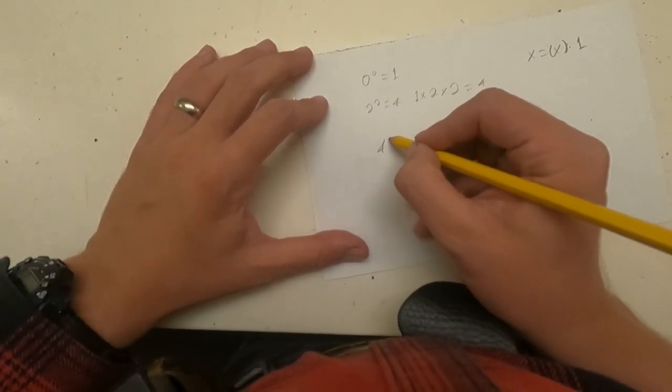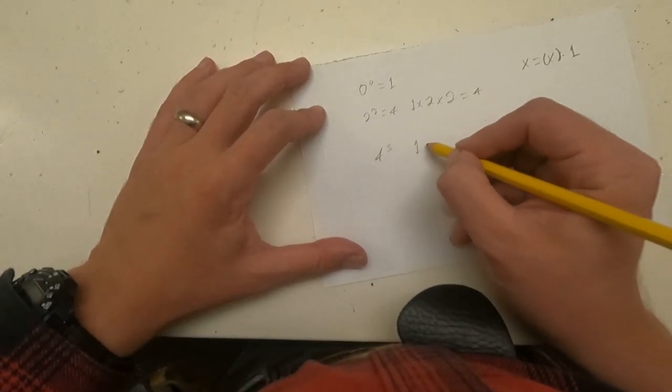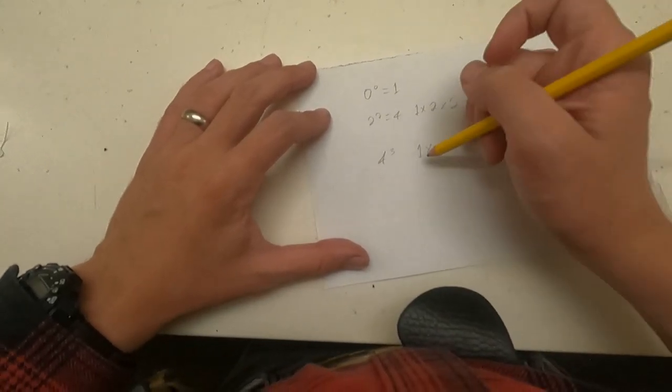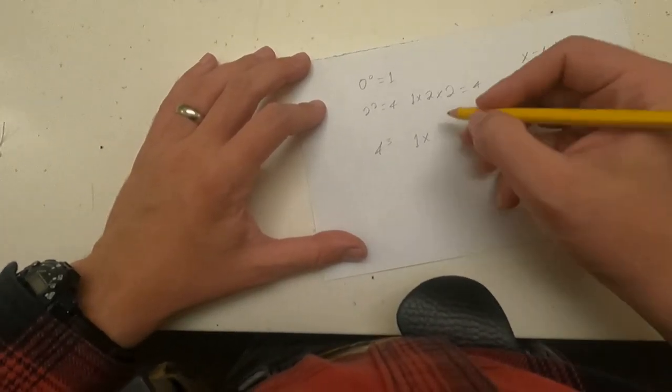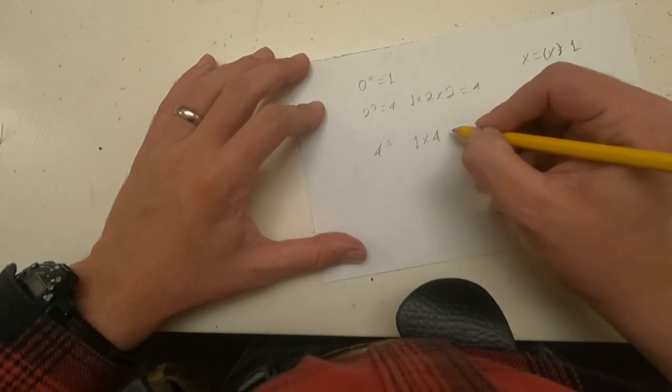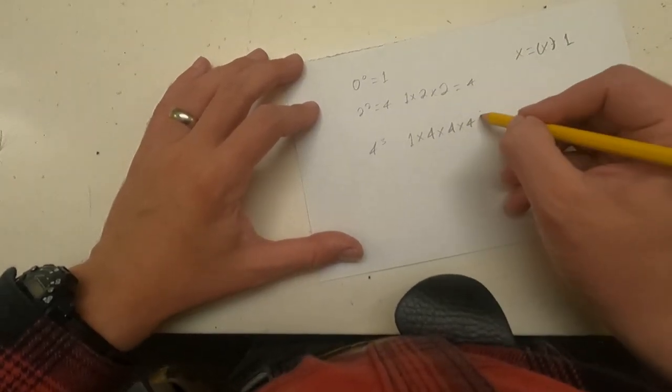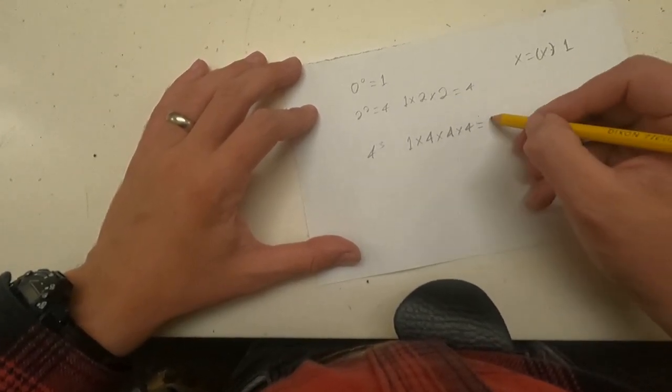So anytime you use any exponent, say 4 to the power of 3, what you have is 1, and in this case, three 4s, and that equals 64.